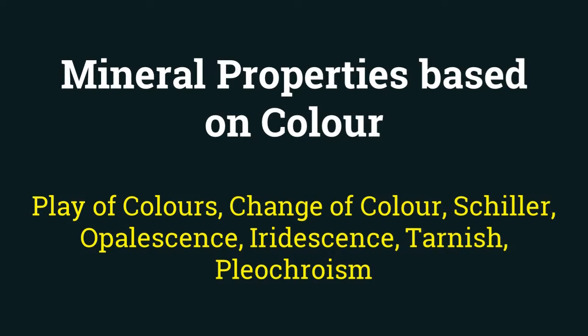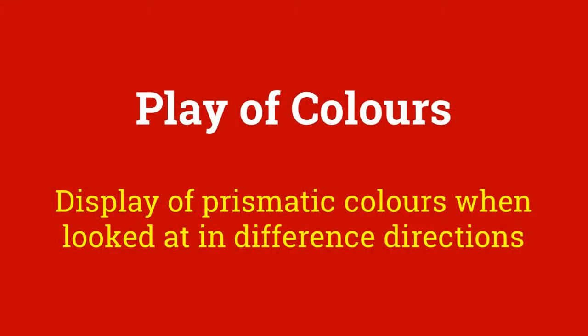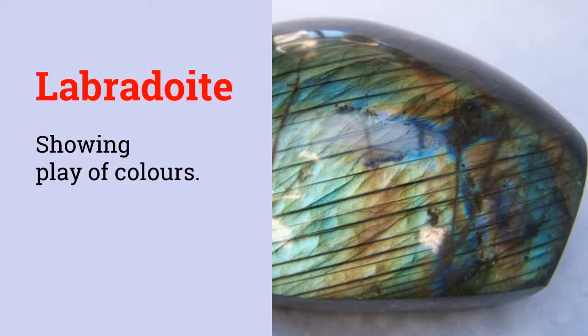There are various properties of minerals based on color like change of color, schiller, opalescence, iridescence, tarnish and pleochroism. We would only discuss play of colors here, but I would encourage you to explore all these other properties yourself. Play of colors is a mineral property by which a mineral displays a changing series of prismatic colors when turned about or looked at in different directions, and diamond is one such example. In this image, we can see play of colors being shown by labradorite.